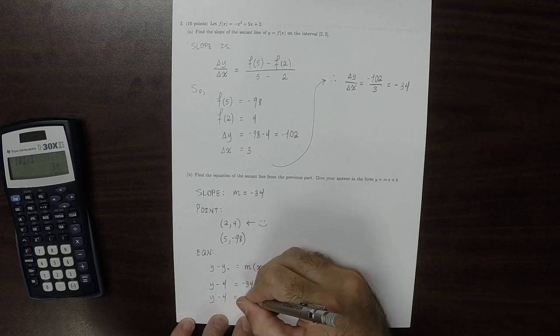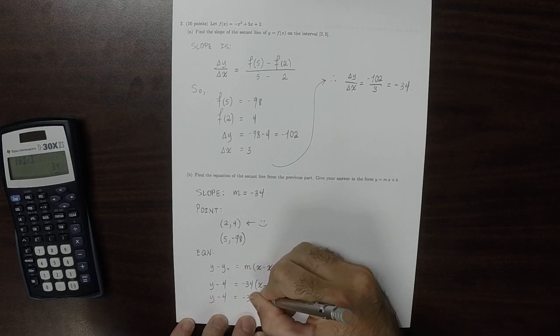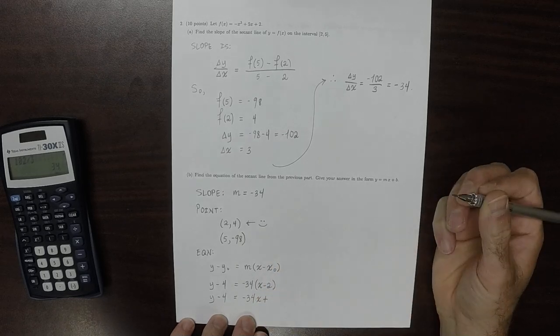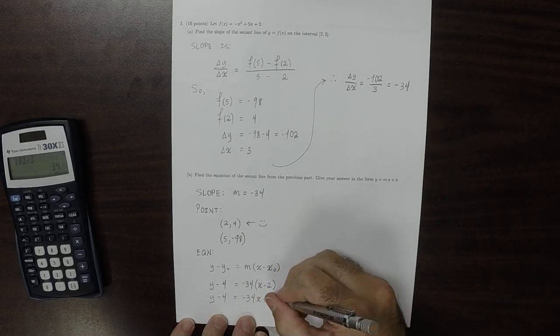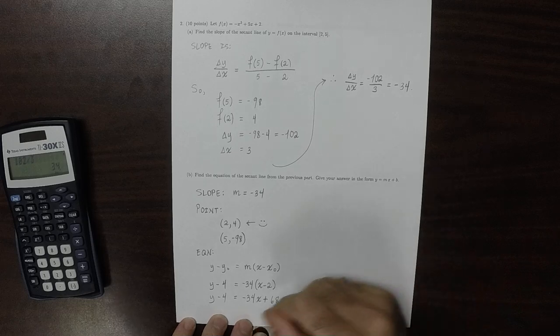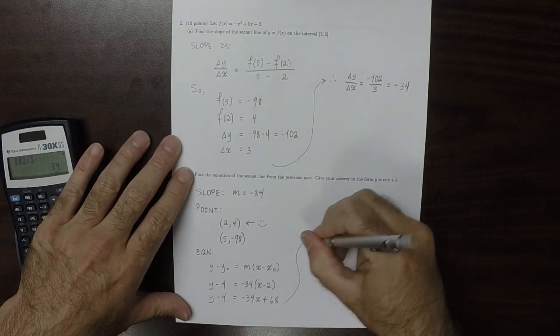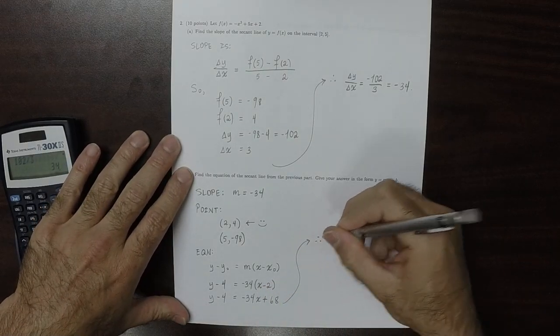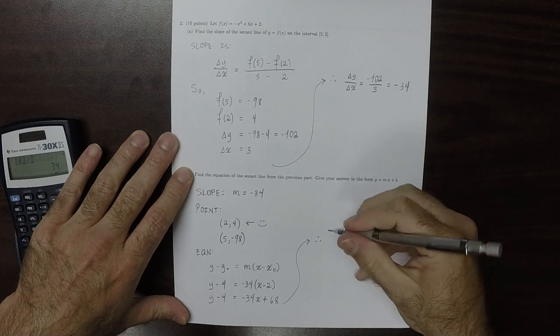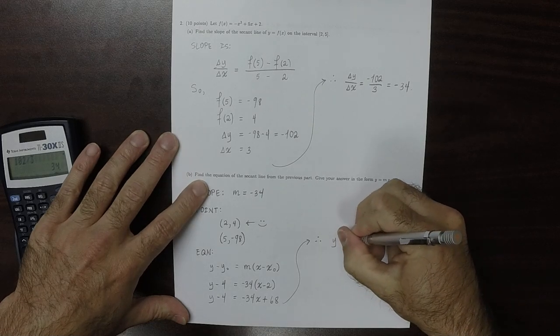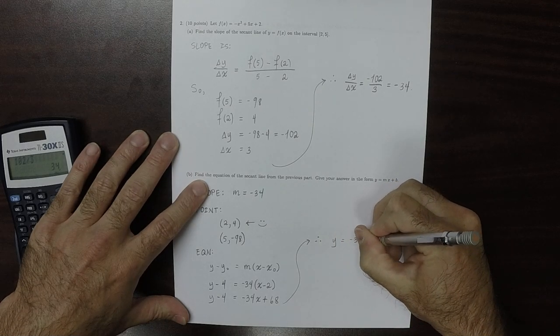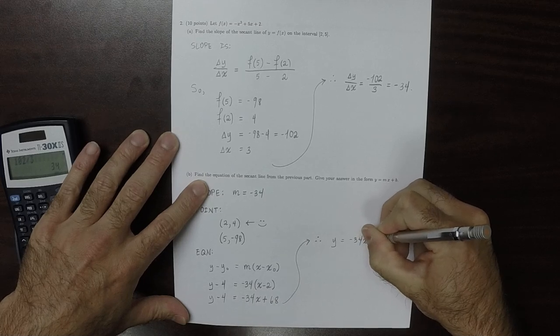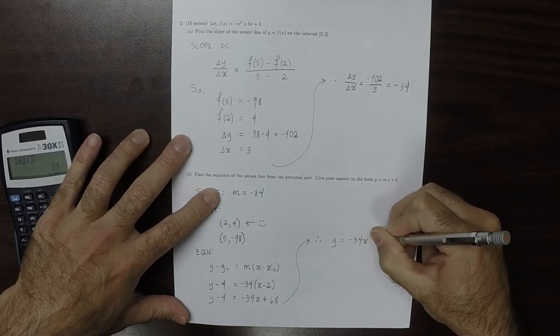So y minus 4 is negative 34x plus 68. And then adding 4 to both sides, we obtain y equal to negative 34x plus 72.